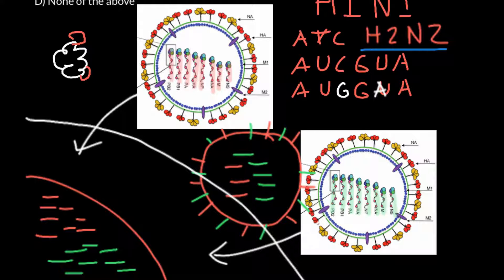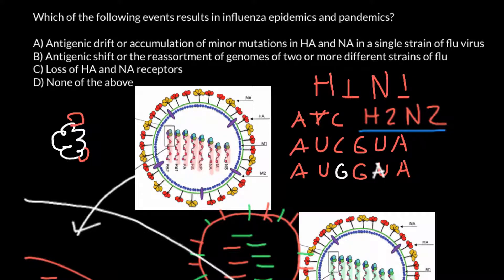Now we can return to the answer choices. Answer A describes antigenic drift, which usually causes only epidemics due to gradual accumulation of mistakes in the genome. Answer B — antigenic shifts, or reassortment of genomes of two or more different strains of flu — usually causes pandemics and can also cause epidemics, so this is the correct answer. Answer C — loss of hemagglutinin and neuraminidase receptors — is wrong, because these are antigens, not receptors, and without these antigens the virus cannot function.